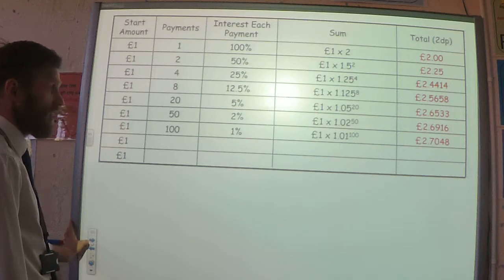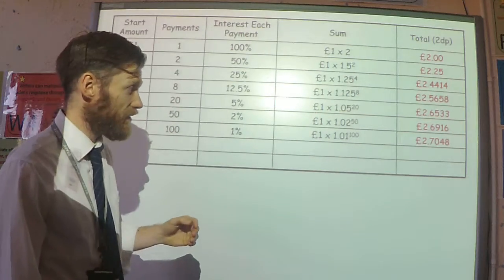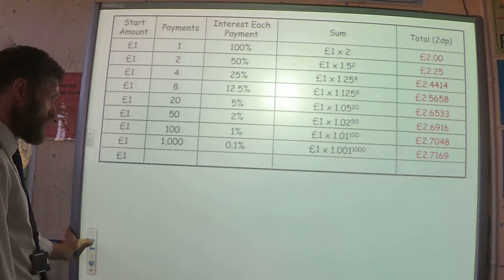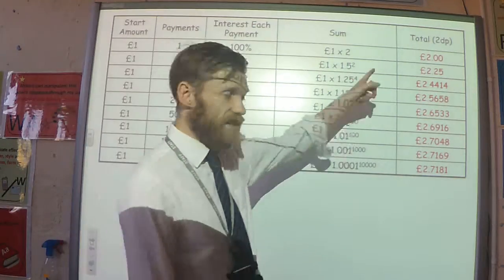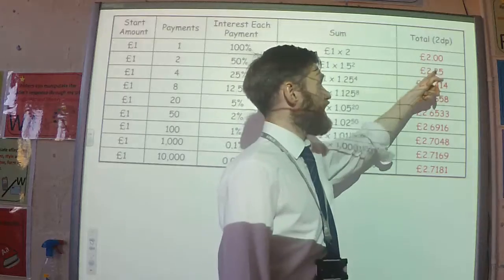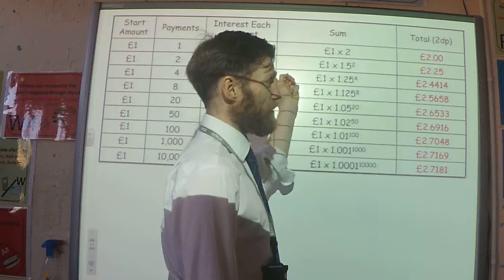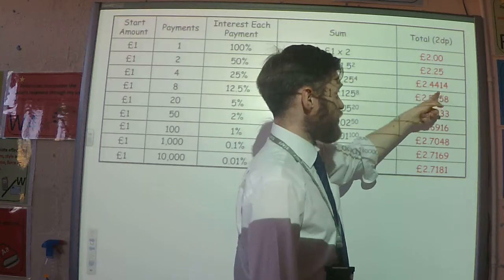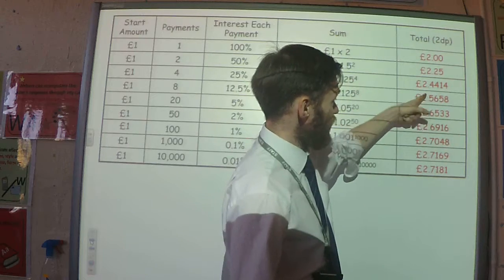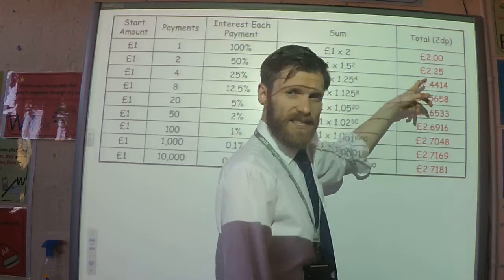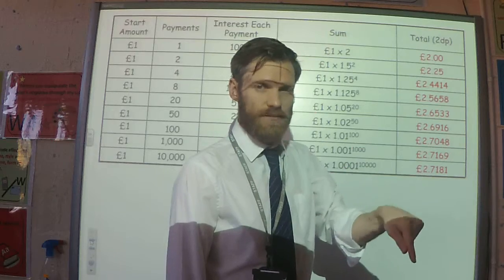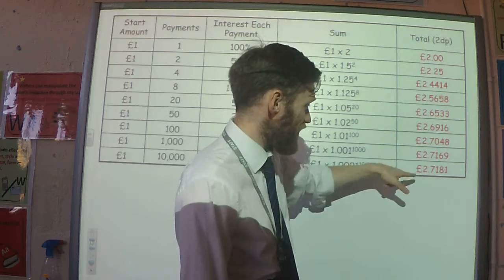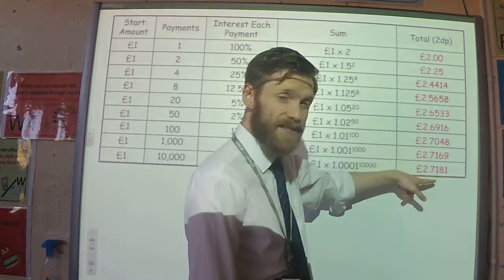What about 100 payments of 1%? My multiplier for a 1% increase is 1.01 to the power of 100. Then 1,000 payments, 10,000 payments. Looking at these numbers, I started off getting quite a big increase. Going from one payment to two payments gained 25p; from two to four payments gained 19p; then 12p, then 9p, then 4p. I'm doing better each time, but the amount by which I'm doing better gets smaller. The difference between 1,000 and 10,000 payments is pretty much insignificant.